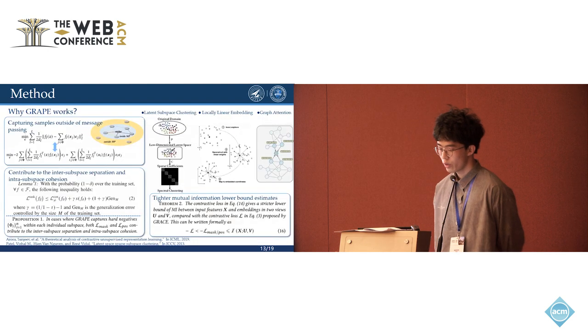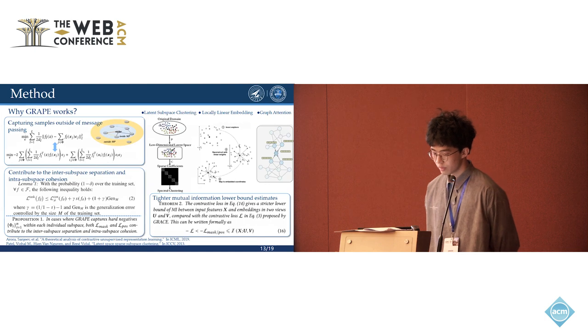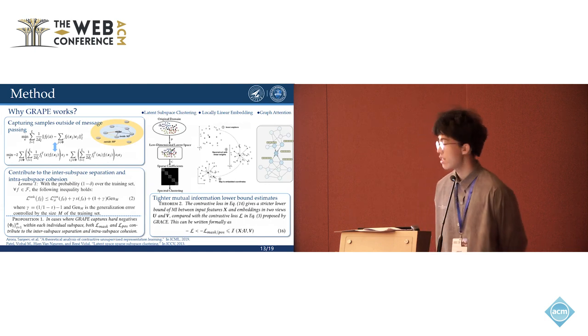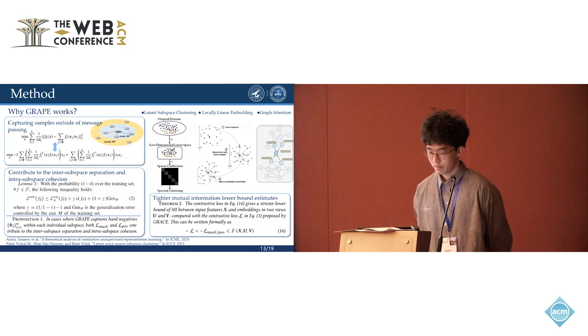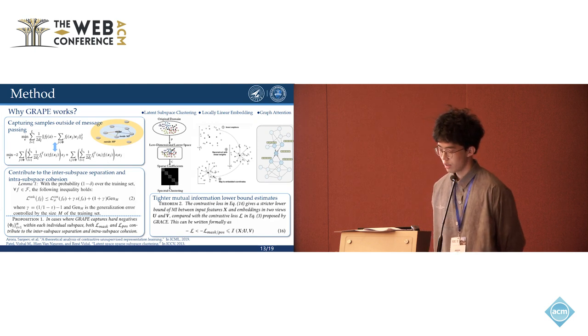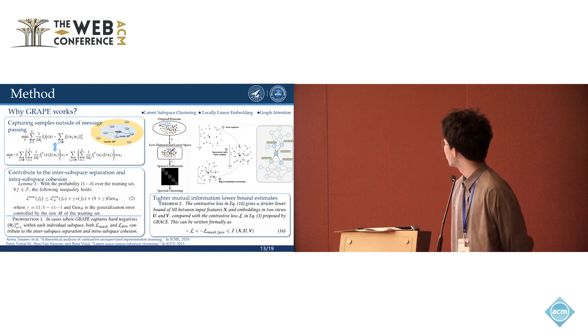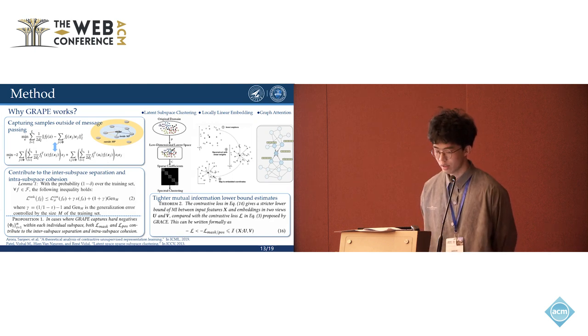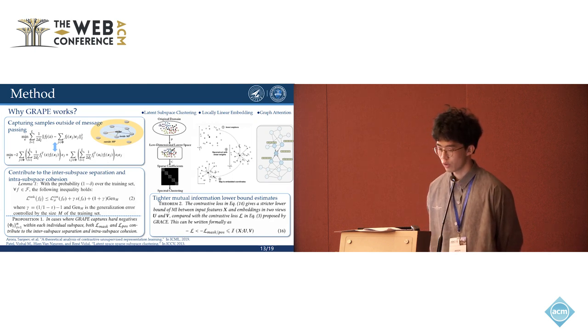We also explain why GRIP works theoretically. First, it captures samples outside of the message passing, which is important. Second, it contributes to interspace separation and intraspace cohesion. We here give proposition one. Third, it brings a tighter mutual information lower bound estimation.